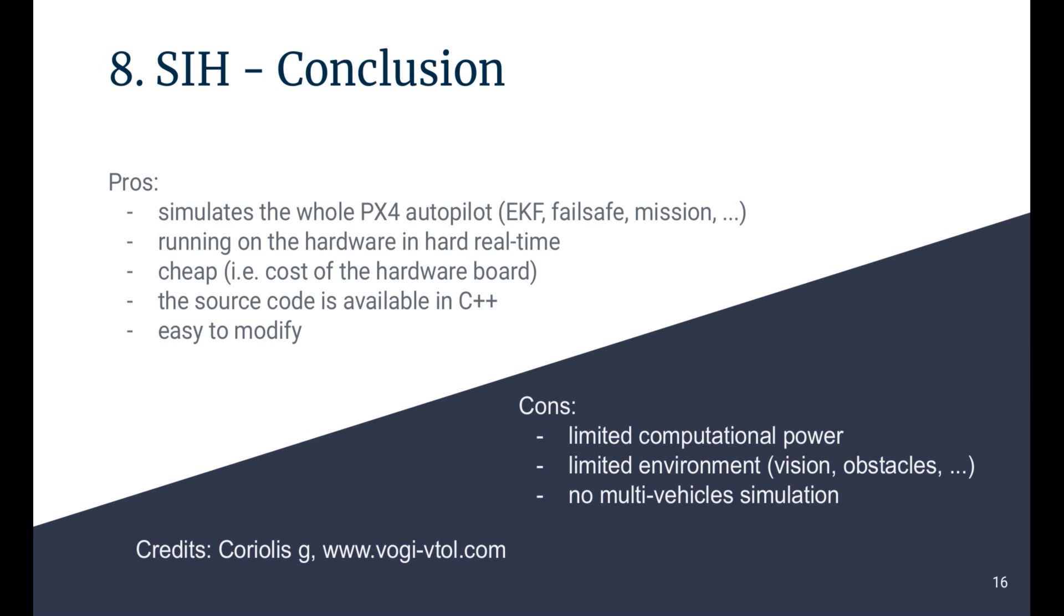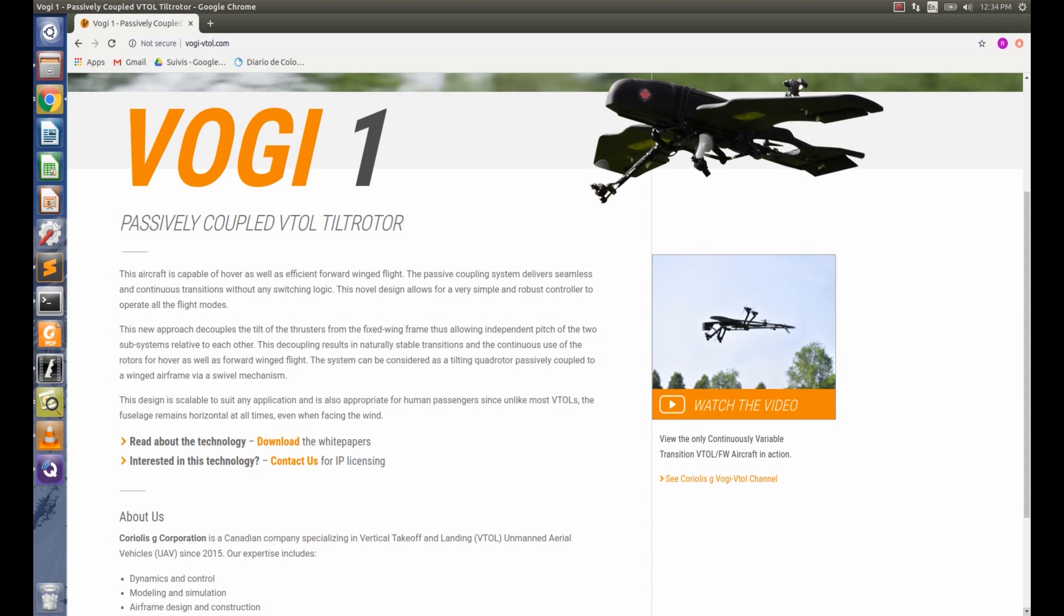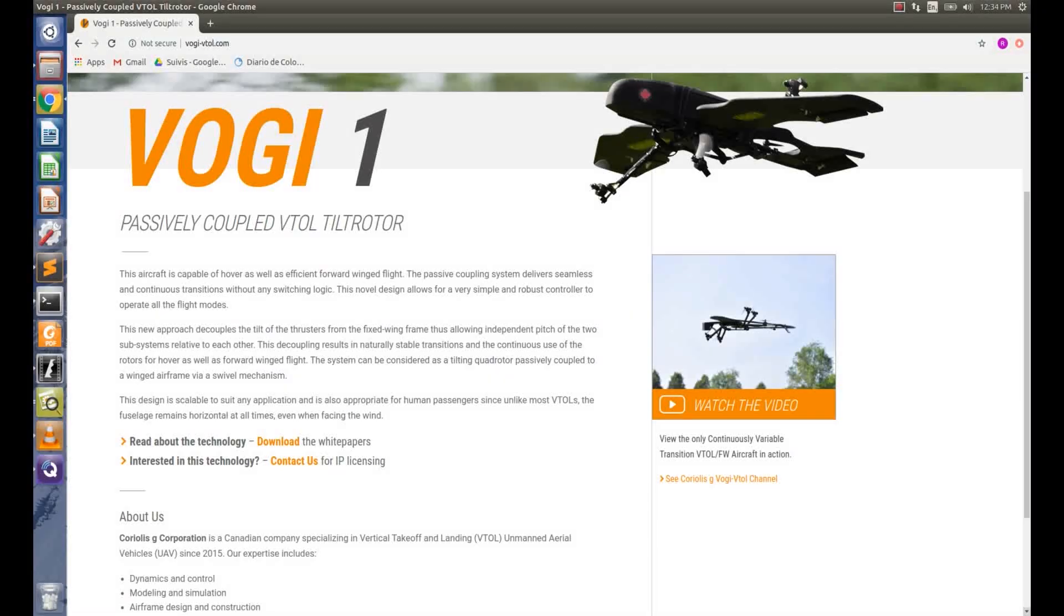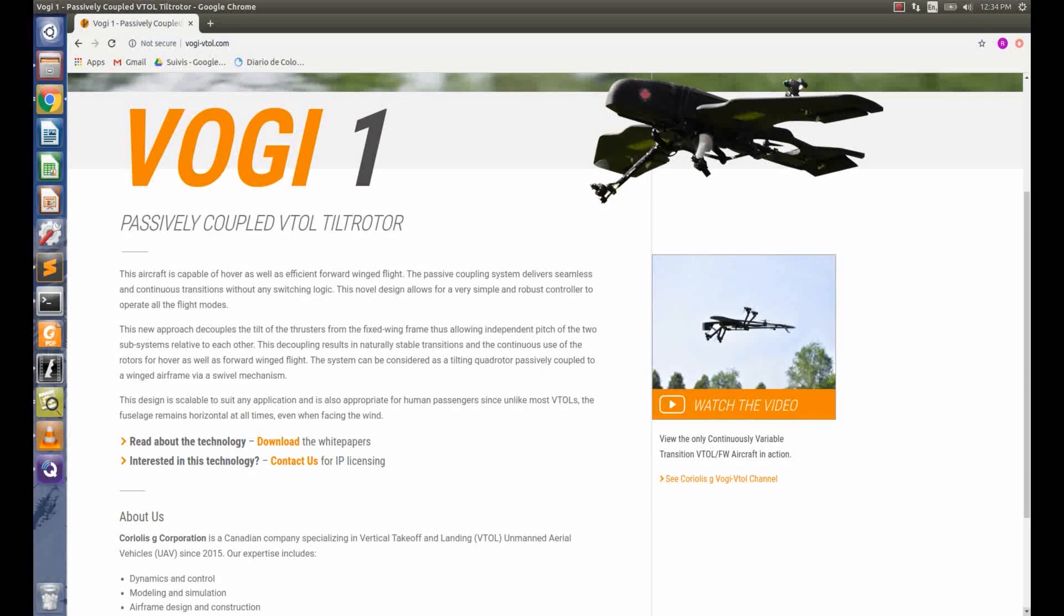Also, I would like to mention that the SIH was developed by Coriolis-G when I was working for them, so all the credits should go to them. You can visit vogie-vtol.com to know more about them. Coriolis-G is a Canadian company developing unconventional VTOL aircraft based on passive coupling mechanism. It means there is no actuator to tilt the rotors, and the result is a very smooth transition. That's a somewhat uncommon technology and it's patented. So feel free to visit their web page.